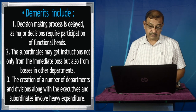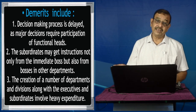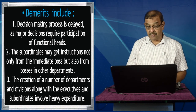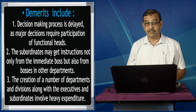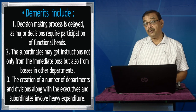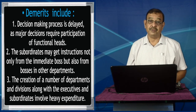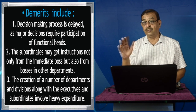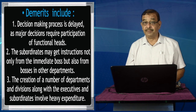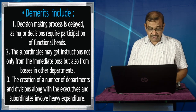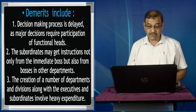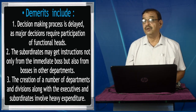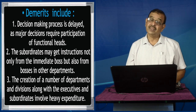However, this involves certain demerits. Decision making may be delayed — the area manager asks the DGM, the DGM asks the GM, through different levels of management. It requires participation of functional heads, and coordination must be established between departments such as marketing and production. Subordinates may receive instructions not only from their immediate boss but also from bosses in other departments — for example, marketing might say to increase sales of an item while production says to stop, because of production problems. There could be confusion. The creation of a number of departments and divisions involves heavy expenditure. The development of specific functions becomes a time-consuming and expensive process.